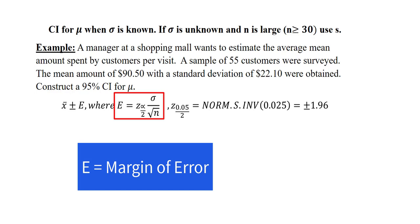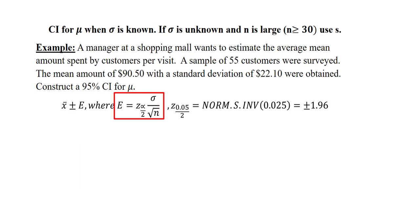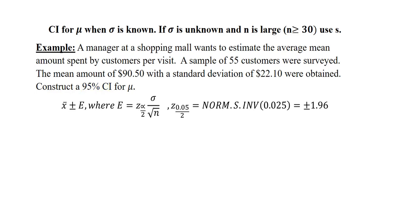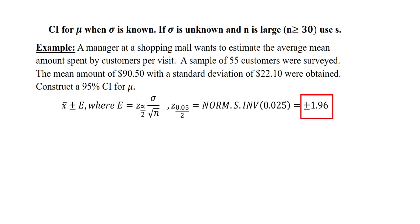I'm going to compute E by taking the critical value Z alpha over 2 multiplied by sigma — in this case, my sigma will be replaced by S because the sample standard deviation is what is given — divided by the square root of sample size n, which is 55. My critical value is based on the confidence interval of 95%. My 1 minus alpha is 0.95, hence my alpha will be 0.05. So my alpha over 2 will be 0.025. I will go to Excel and in any cell I will type NORM.S.INV(0.025) and it returns the critical value 1.96.